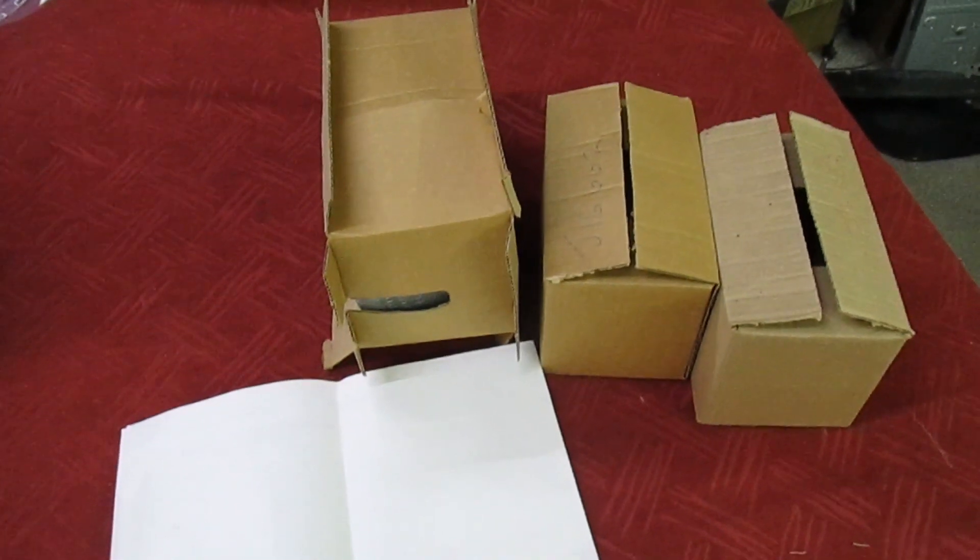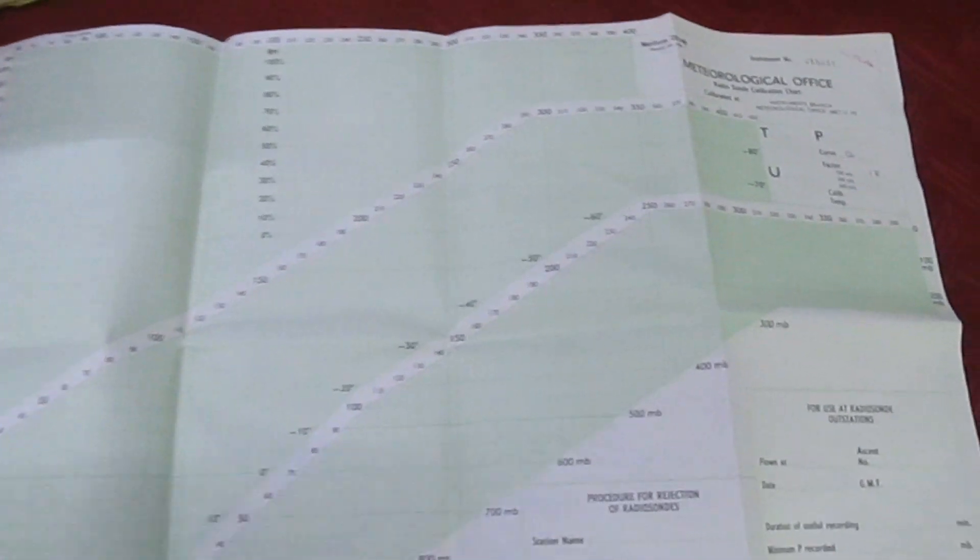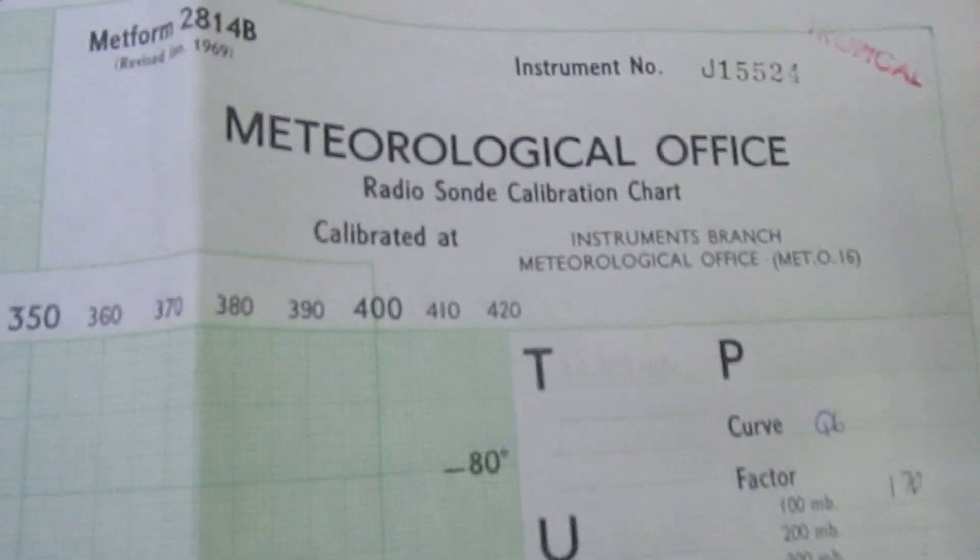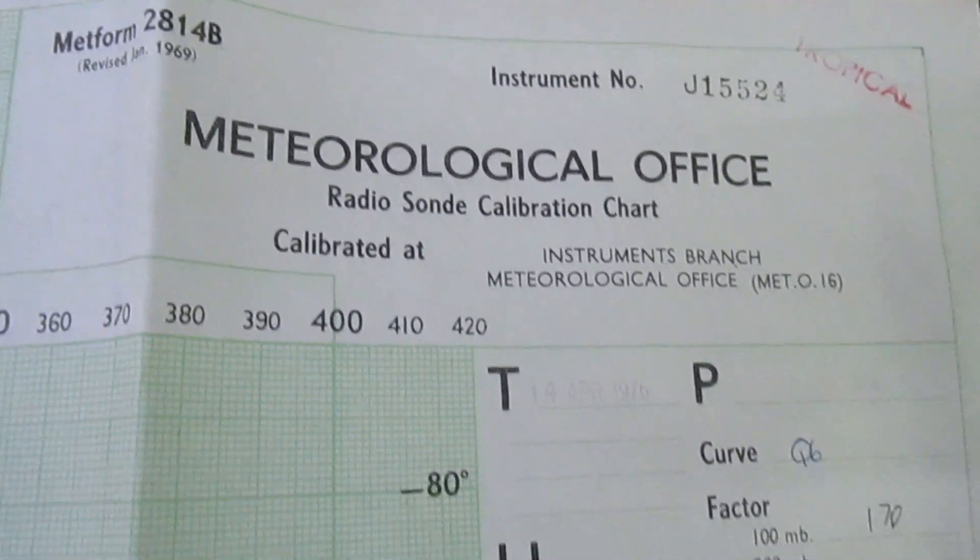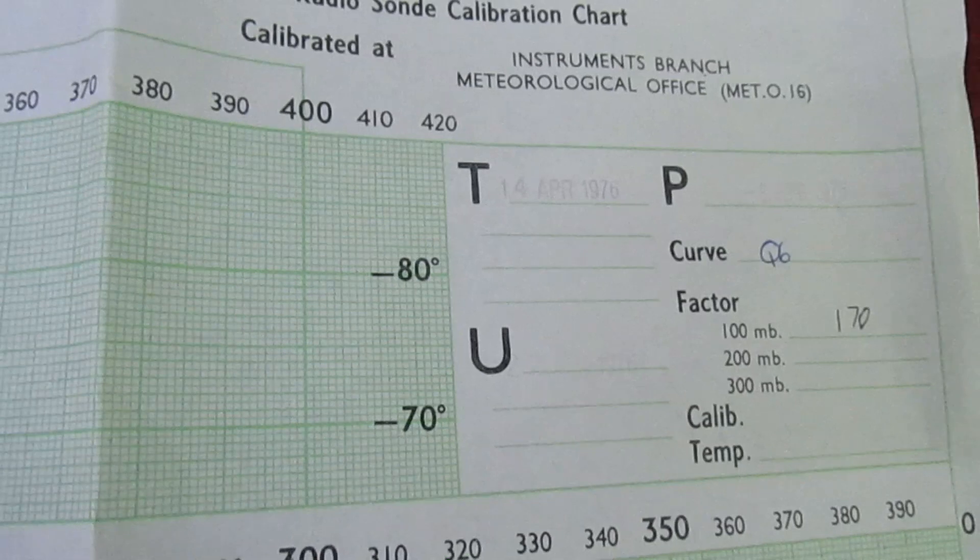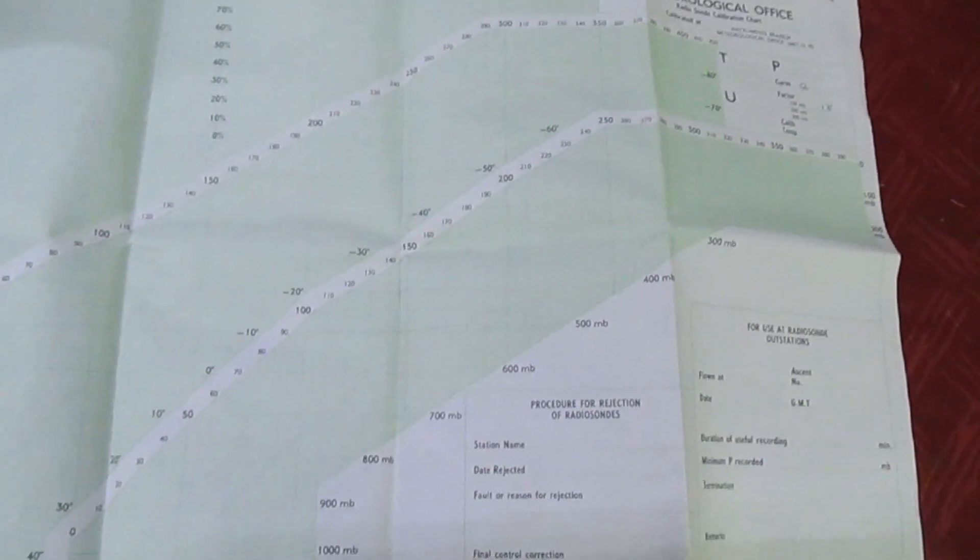Right, so we're inside the big box. These three small boxes and there's also this chart which seems to be some sort of calibration certificate. So if we just open that up and we have a quick look there, it says calibration chart. So presumably this thing's been tested and calibrated. So that's the first thing in the box.